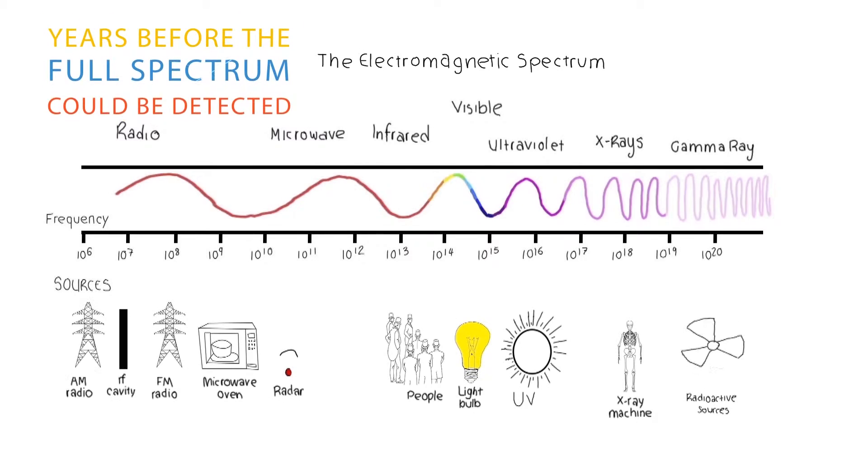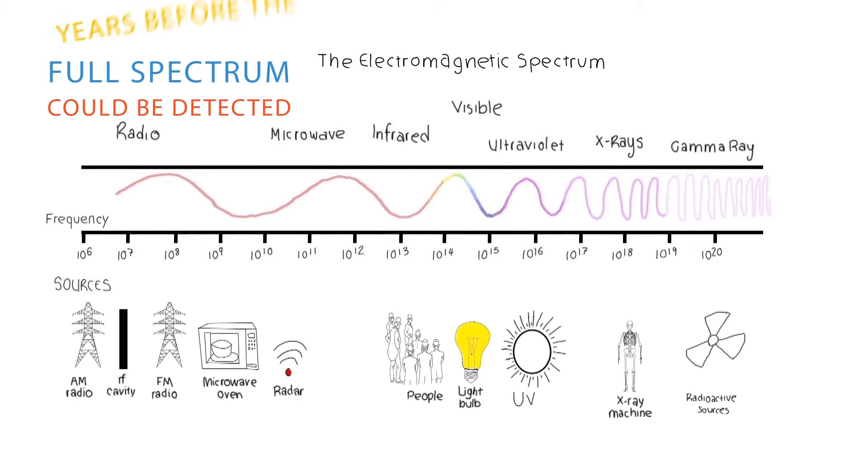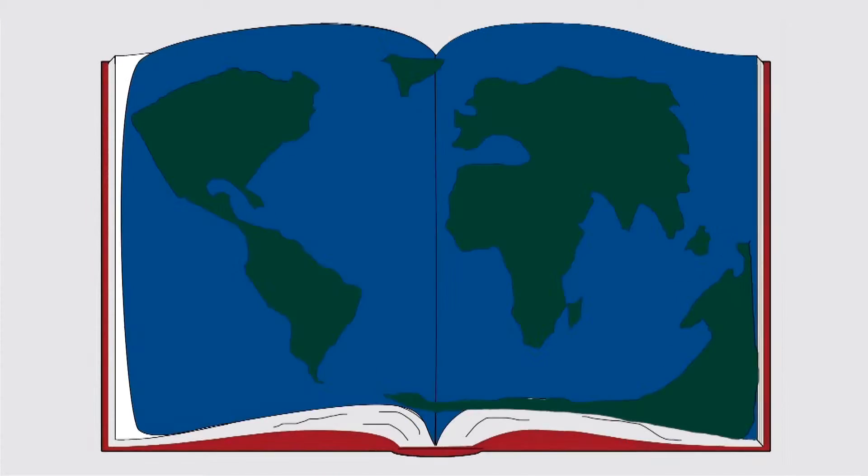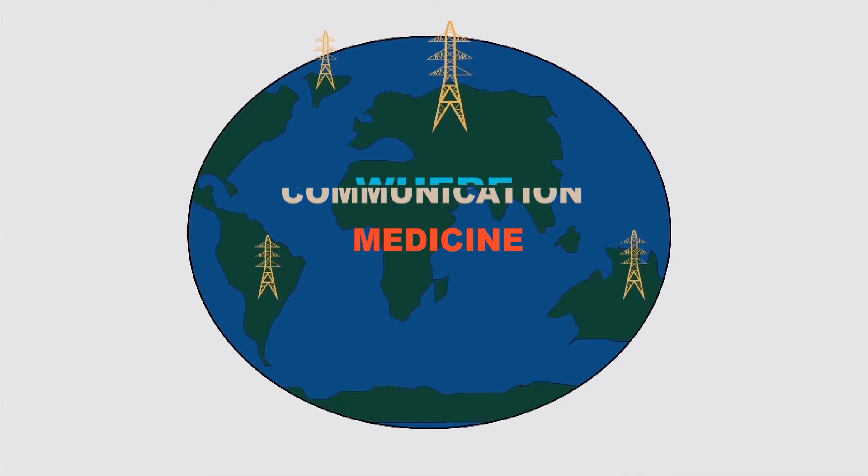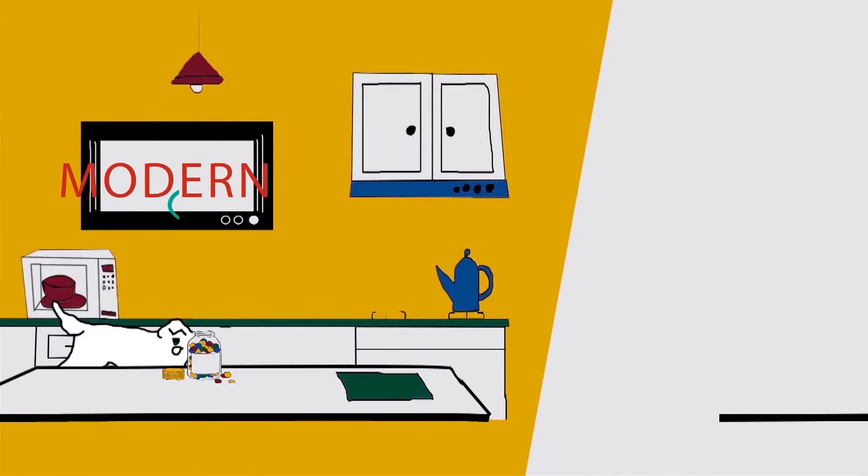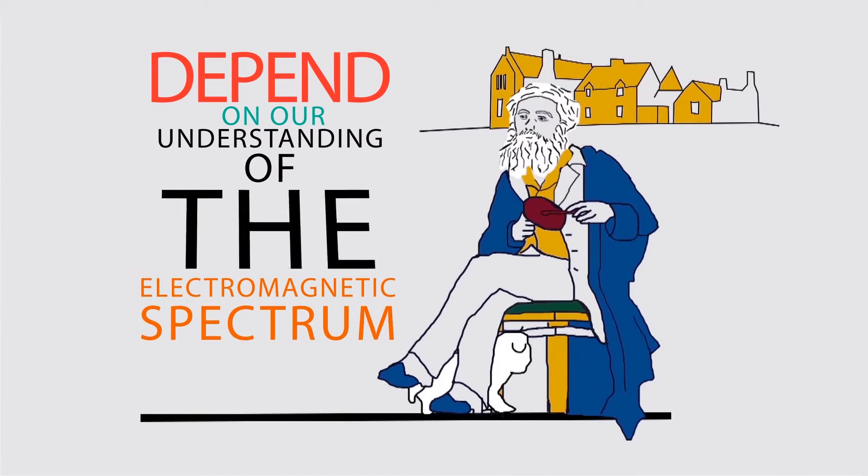He described the existence of the vast electromagnetic spectrum years before it could be detected. Not only do we live in a world in which our communication, medicine and modern appliances depend on our understanding of the electromagnetic spectrum, but Maxwell's way of thinking about light was a very modern one.